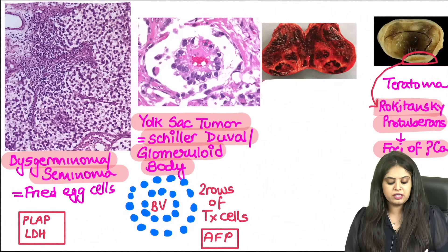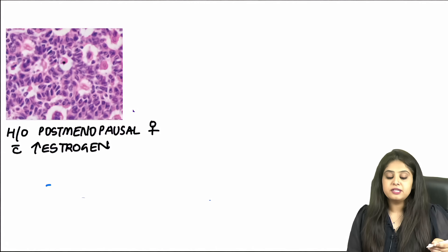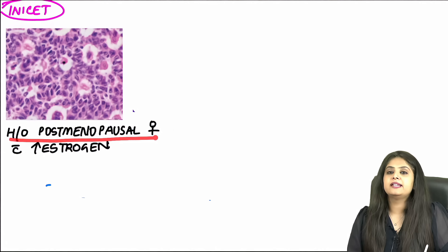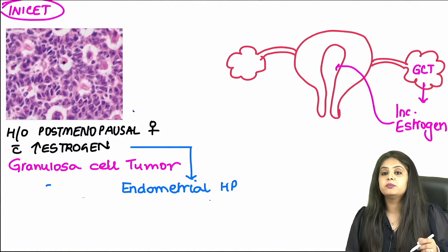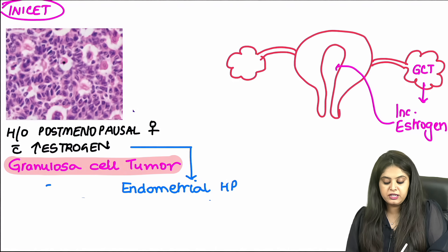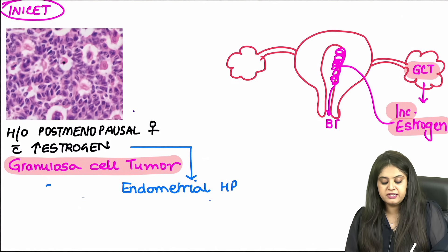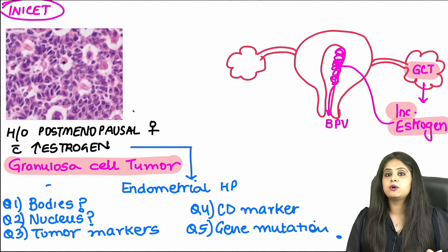The next shows lots of hemorrhage and necrosis — this is choriocarcinoma — and the tumour marker is beta-HCG. The following tumour was recently asked in the INI-CET exam: a postmenopausal female with unexpectedly elevated oestrogen. This points to a granulosa cell tumour, which releases oestrogen from the ovary. Excess oestrogen causes endometrial hyperplasia, leading the patient to present with postmenopausal vaginal bleeding. Now there are 5 questions to answer: the bodies seen in the image, the special nucleus type, the tumour marker, the CD marker, and the gene mutation.